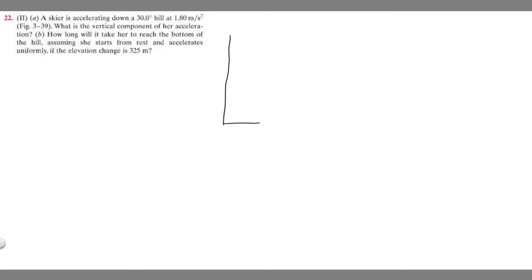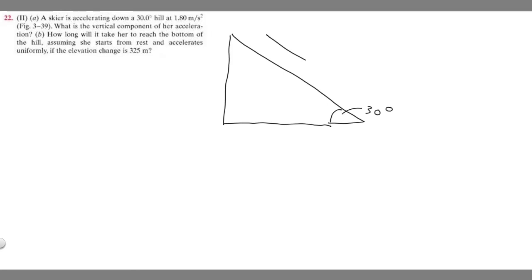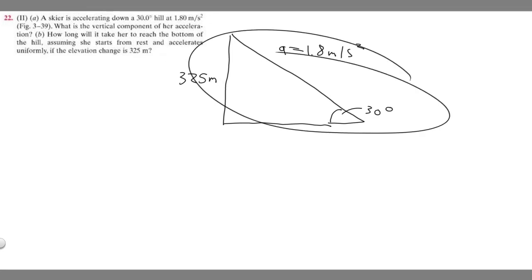They give you a diagram, but I'm just going to redraw it. So imagine this is our hill here — it's going to be a 30-degree hill, so this angle right here is 30 degrees. We know they're going to be going down the hill, and their acceleration is going to be 1.8 meters per second squared. They also tell us the elevation change is 325 meters. So if she starts here and ends here, this vertical length right here is going to be 325 meters.